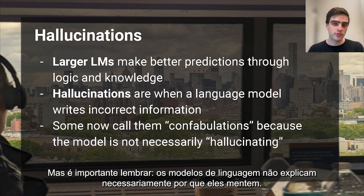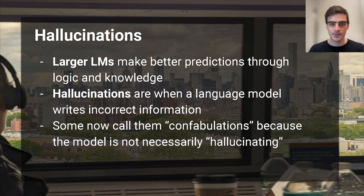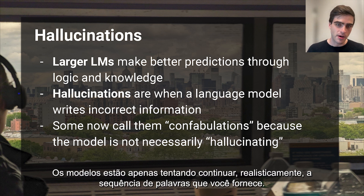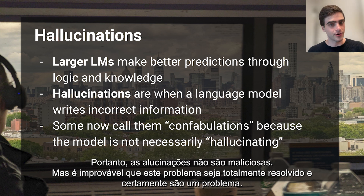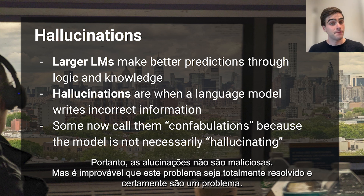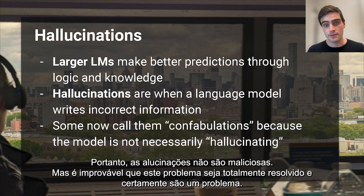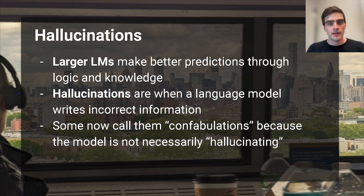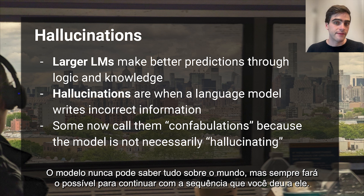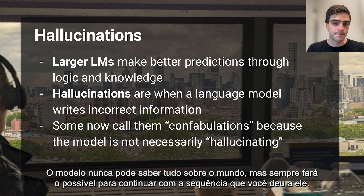But it's important to remember language models do not necessarily lie. It's important to remember they are not conscious. They do not have intention. The model is only ever trying to realistically continue the sequence you give it. So hallucinations are not malicious. But it's unlikely that they'll ever be fully solved, and they are certainly a problem. The model can't ever know everything about the world, but it'll always do its best to continue the sequence that you give it.